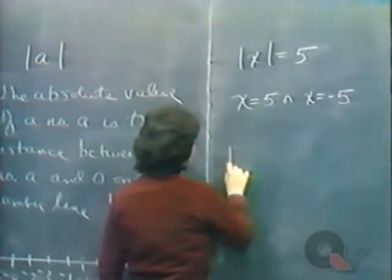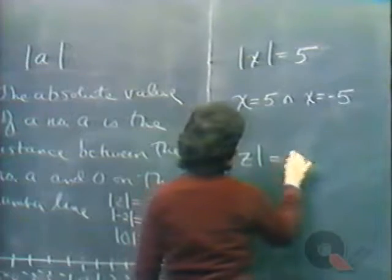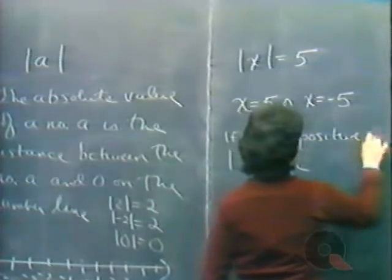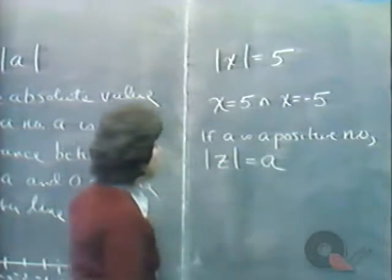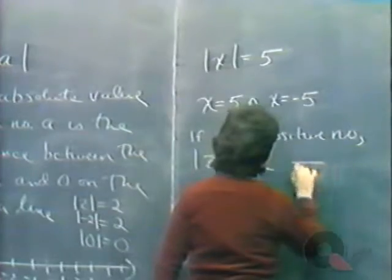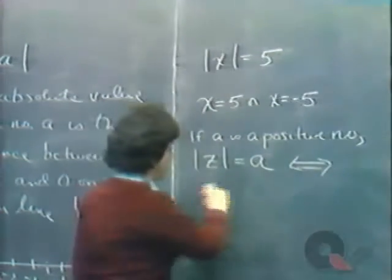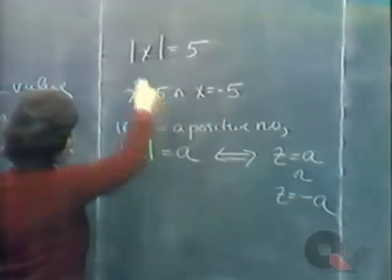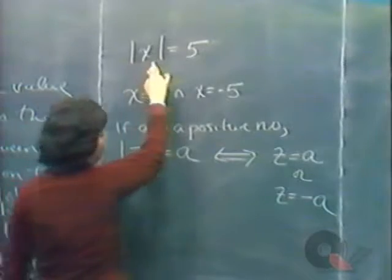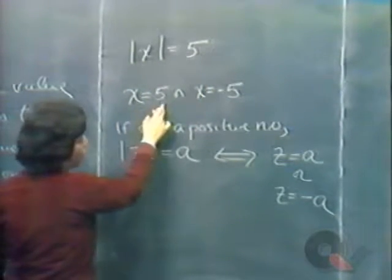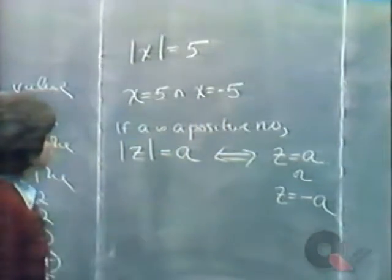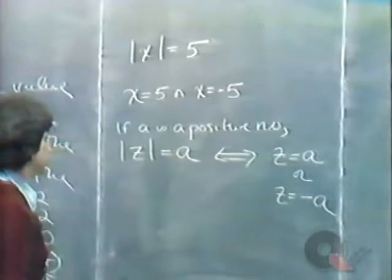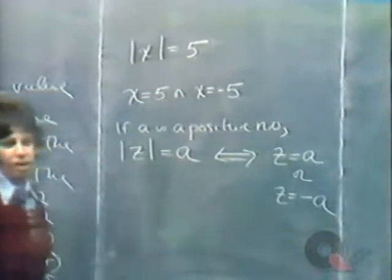In general, if we have the absolute value of Z equal to some number A, where A is a positive number, this is equivalent to two equations without absolute value: Z equals A or Z equals minus A. We have a function or expression inside the absolute value symbol. This rule only applies when A is a positive number; we'll consider what happens when A is negative a little later.